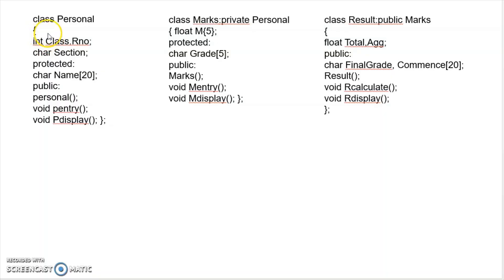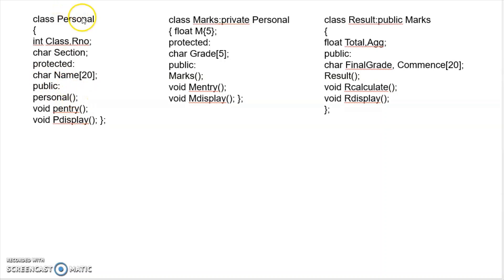The default access specifier is private. The class has a roll number as an integer variable and section as a character variable — these are private variables. In the protected section, there is a name variable of 20 characters — a string variable. In the public section, there is a constructor, P entry, and P display — two methods are declared.